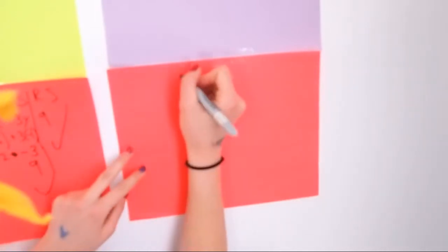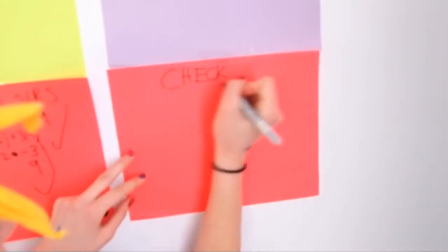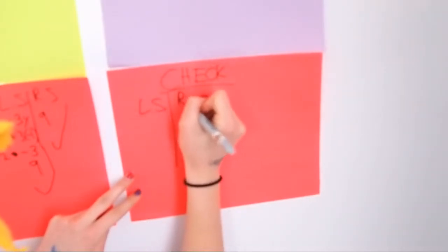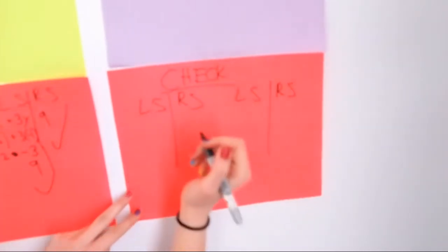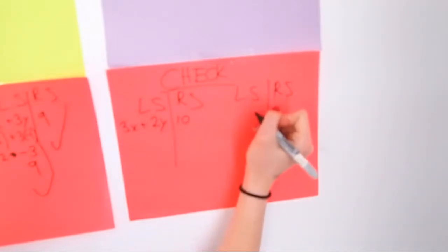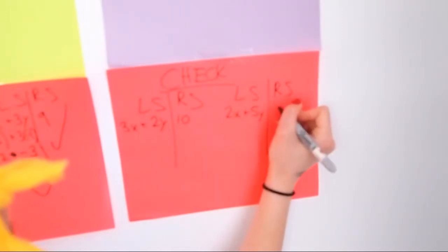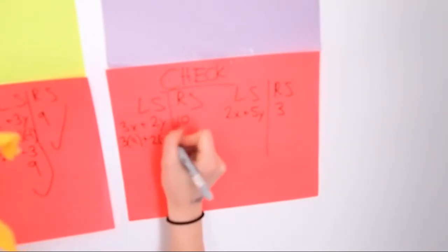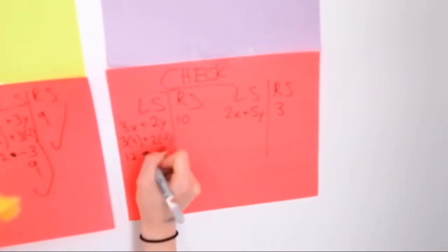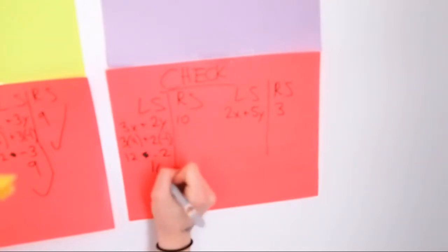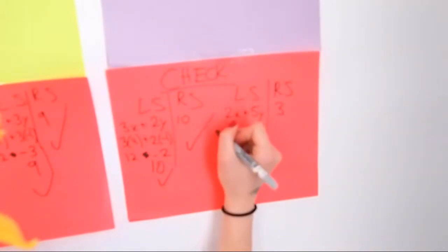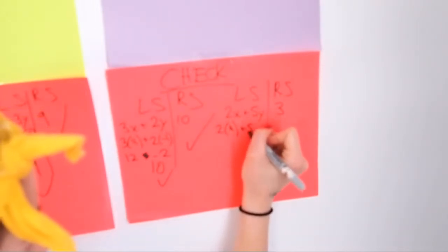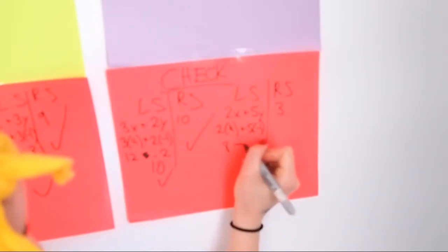And now for the check. You have a left side and a right side, and you put both equations. For 3x plus 2y equals 10: 3 times 4 plus 2 times negative 1 equals 12 minus 2 equals 10 — check! For 2x plus 5y equals 3: 2 times 4 plus 5 times negative 1 equals 8 minus 5 equals 3. Both sides are the same, so you know you did it correctly.